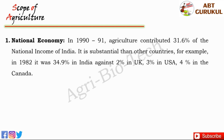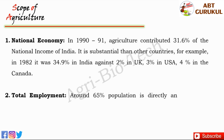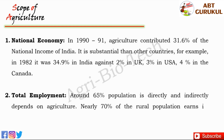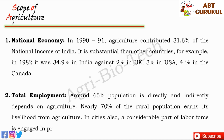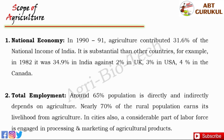Now see the contribution of agriculture in total employment of a country. Around 65% of the population is working and depends on agriculture and allied activities. Nearly 70% of the rural population earns its livelihood from agriculture. In cities also, a considerable part of the labor force is engaged in jobs depending on processing and marketing of agricultural products.